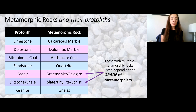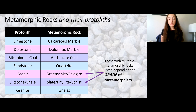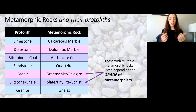Limestone forms calcitic marble, dolostone forms dolomitic marble, and coal can be metamorphosed into more pure coal — basically more pure carbon rather than carbon plus impurities. Sandstone can form quartzite, which is an important one: sandstone is mainly quartz, so when it's metamorphosed it becomes congealed quartz instead of the quartz grains you can feel in sandstone. You can't feel that in quartzite.